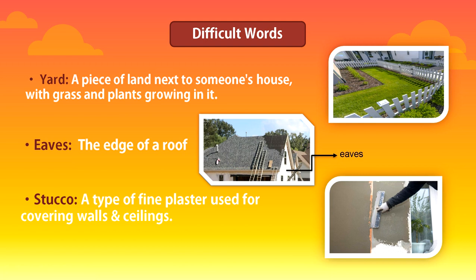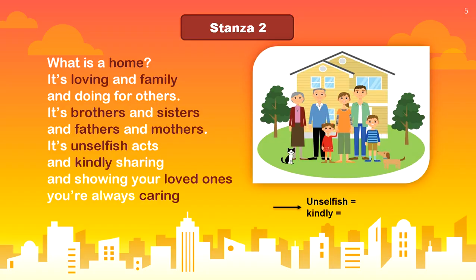I hope you have understood the meaning of these words. Now let's move on to the next stanza of the poem. Stanza 2 — What is a home? Here, the poetess is trying to make us understand the meaning of home. Let's read stanza 2 completely.